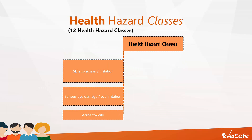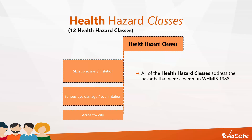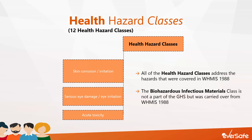While WHMIS 2015 health hazard classes subdivide hazards in a way that's different from the original WHMIS, all the classes address almost all of the health hazards covered in WHMIS 1988 and include some additional types of hazards. The additional hazard classes have been included to further improve worker safety and health. WHMIS 2015 health hazard classes include all the GHS health hazard classes, along with the biohazardous infectious materials class, which is actually not part of GHS — it was part of WHMIS 1988. In addition, there's a new class called Health Hazards Not Otherwise Classified.